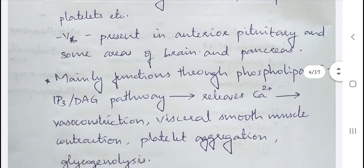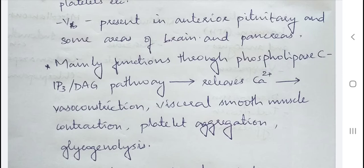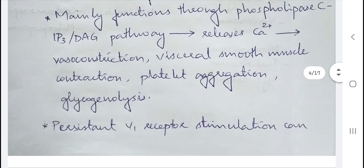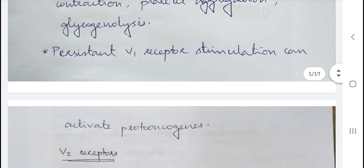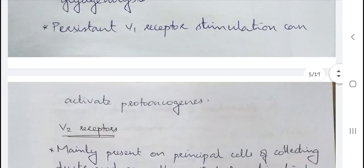The V1 receptors function through the phospholipase C / IP3-DAG pathway, releasing calcium in response to vasopressin binding. This induces vasoconstriction when acting on blood vessels, visceral smooth muscle contraction, platelet aggregation, and glycogenolysis depending on location. Persistent V1 receptor stimulation activates proto-oncogenes, leading to hypertrophy of vascular smooth muscle.